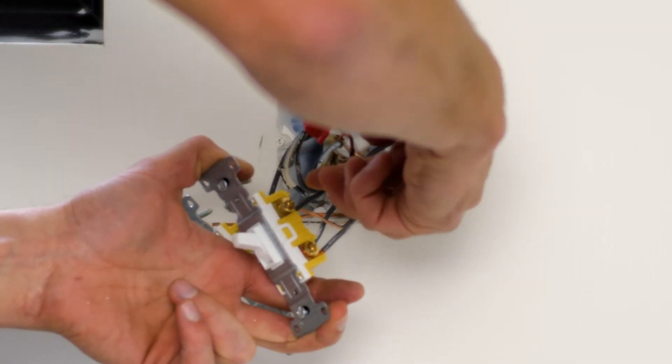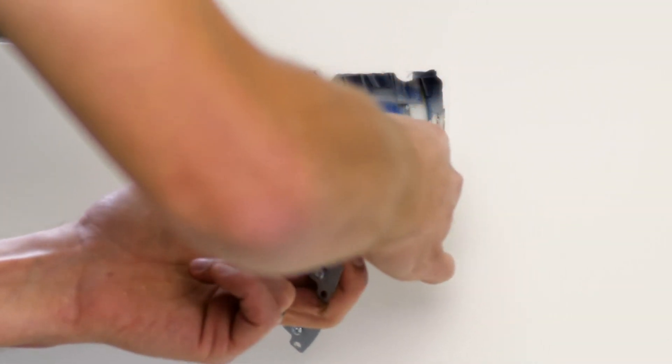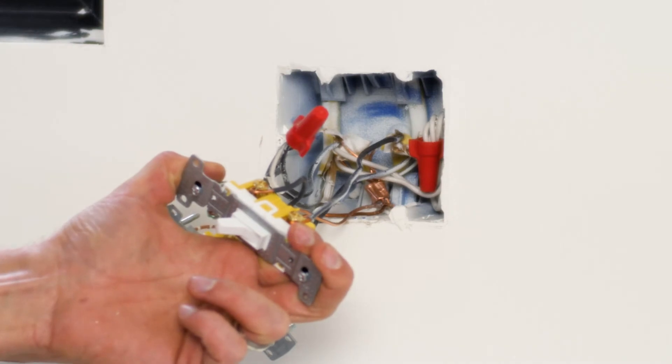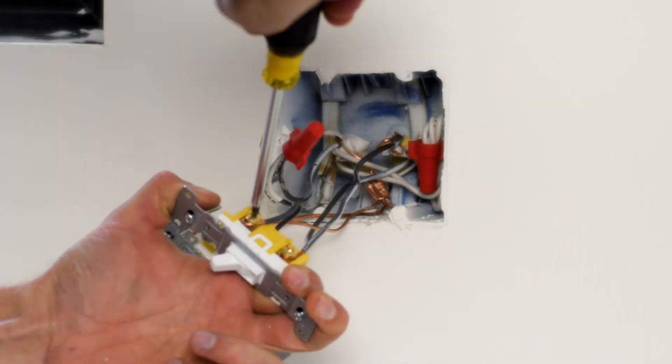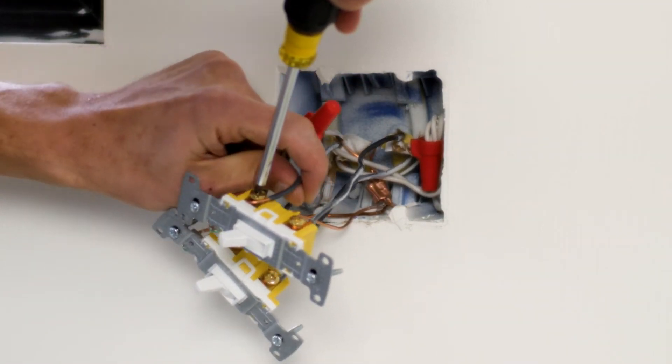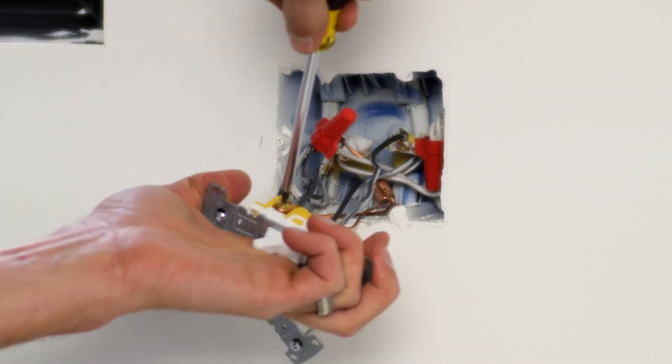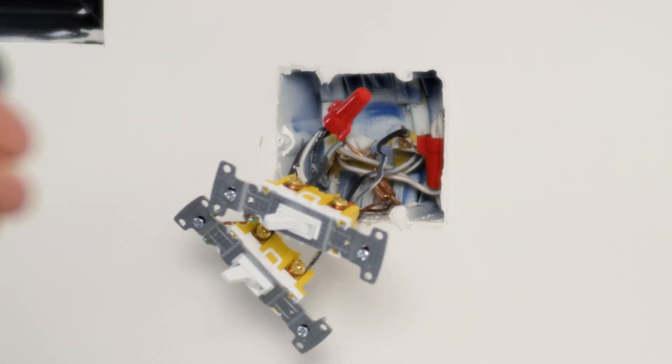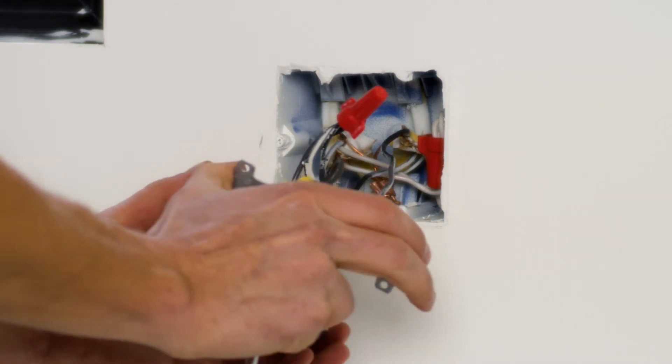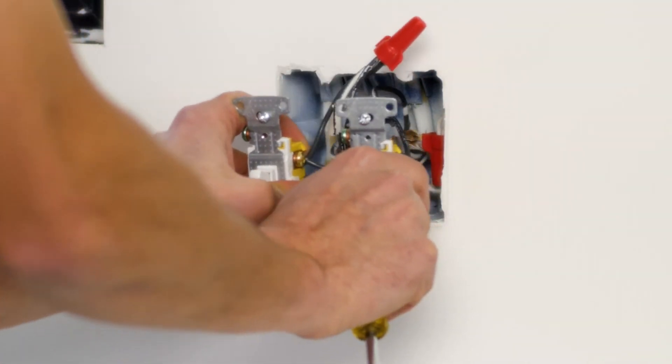I'm going to work it underneath the ground wire. I don't want there to be pressure between my ground and my hot conductor. Still using my number one square drive, quite snug, never death grip.